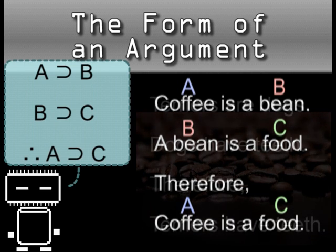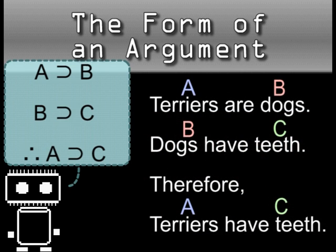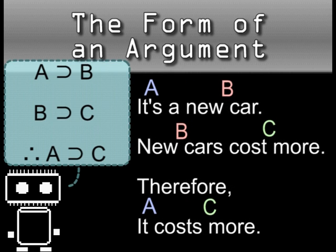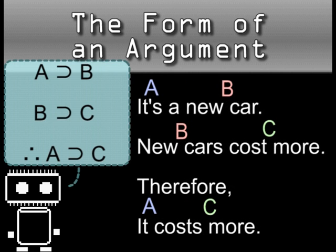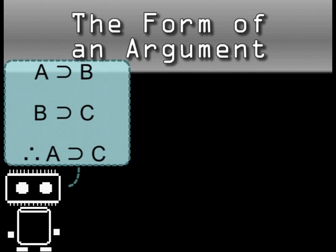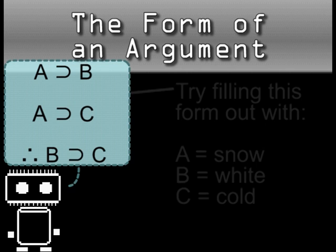You'll find that however you fill in this structure, the argument seems to work. If, on the other hand, I tried to fill out the argument with a structure like premise 1: A is B, premise 2: A is C, conclusion: therefore B is C — it turns out that the argument doesn't work. Apply this form to a few cases and you'll figure out pretty quickly that it fails.